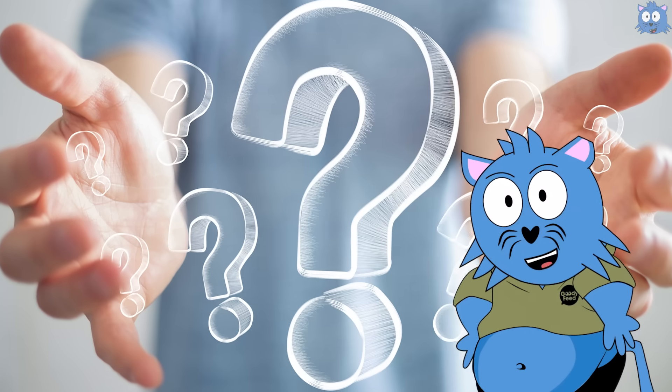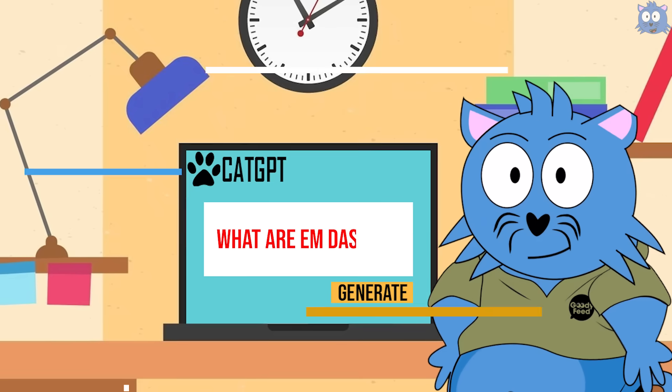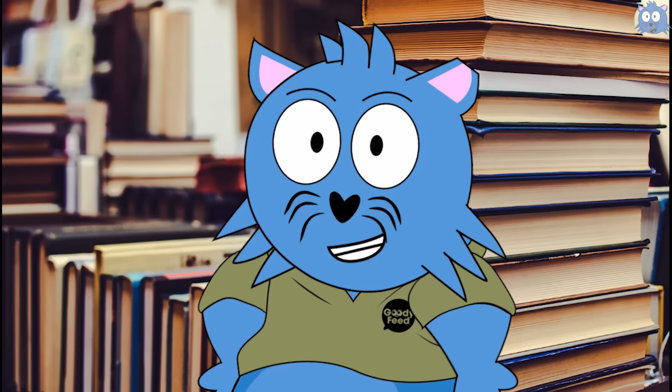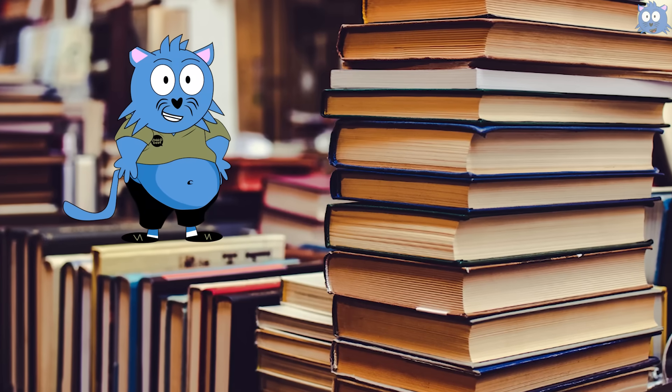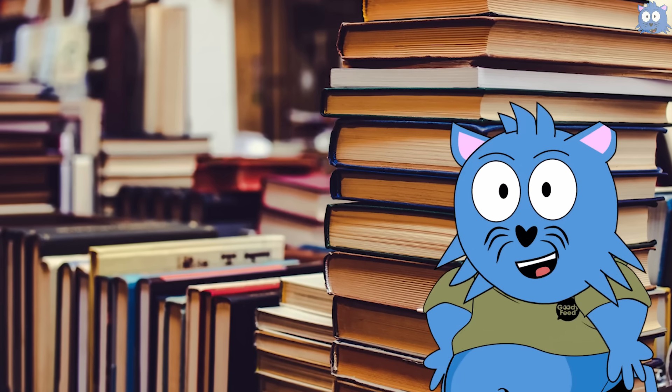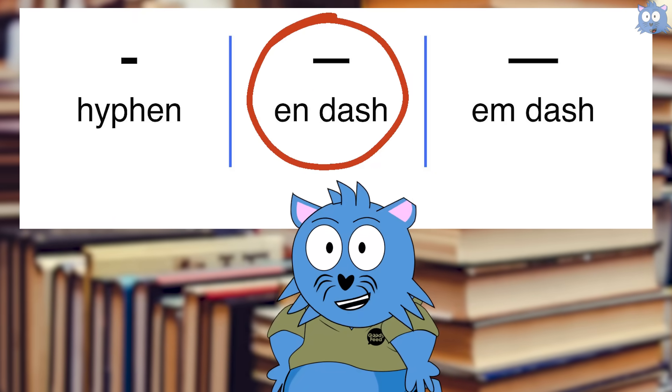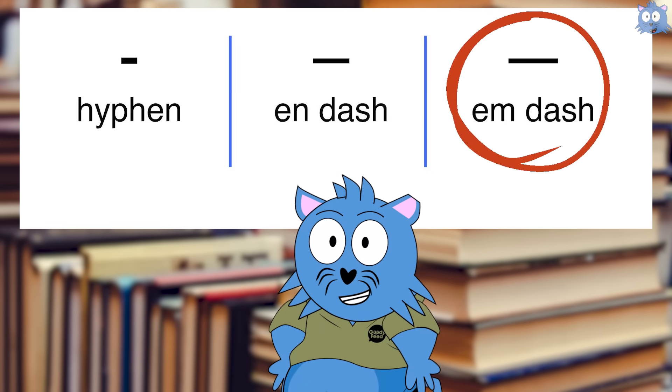For a start, what are M-dashes? In the English language, there are three types of dashes: the hyphen, the N-dash, and the M-dash.